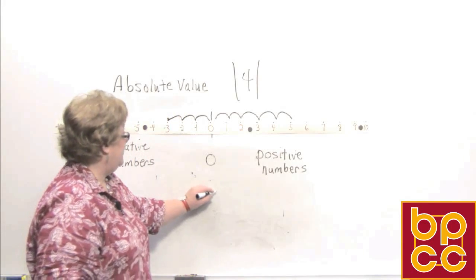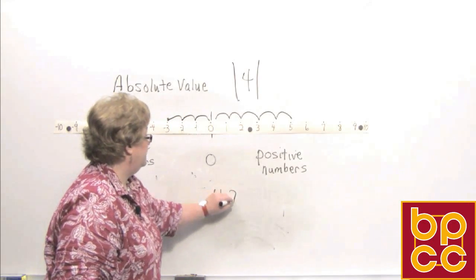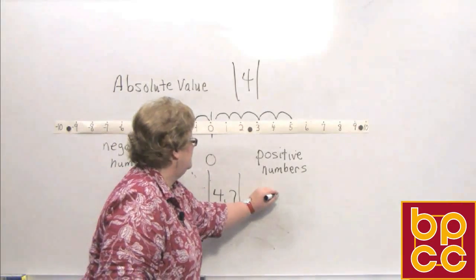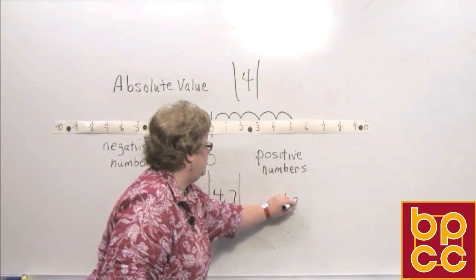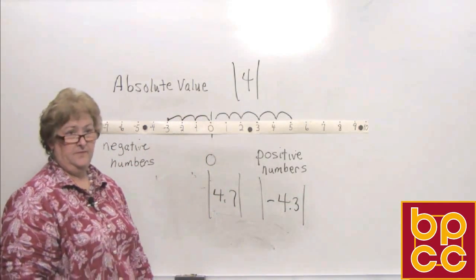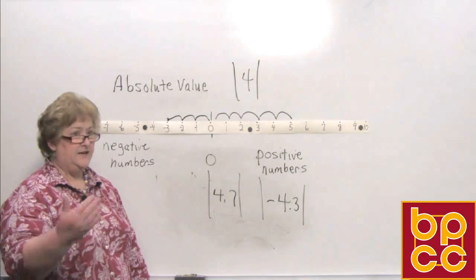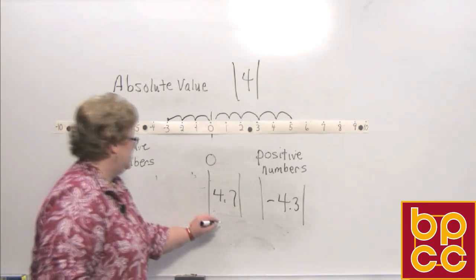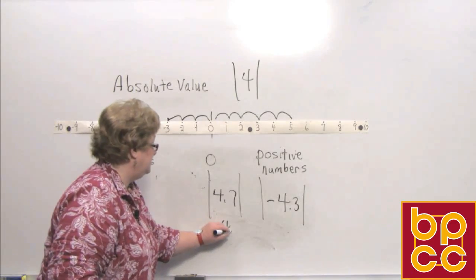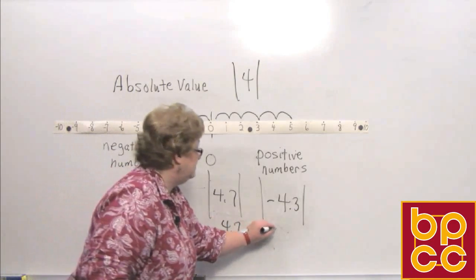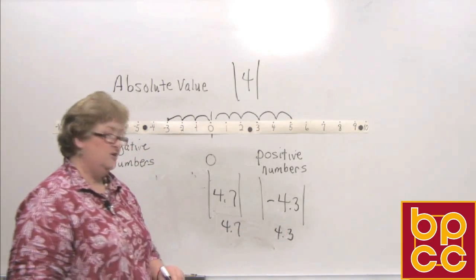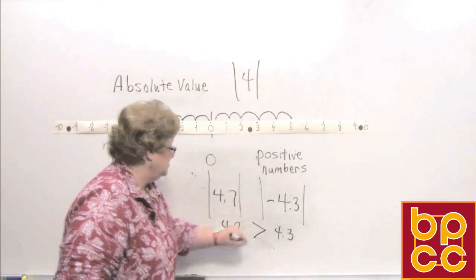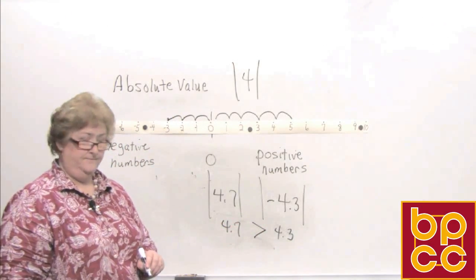Let's say I have 4.7 in absolute value and I'd like to compare it to negative 4.3 in absolute value. It doesn't matter if it's positive or negative — it always comes out as a positive. So 4.7 comes out as 4.7, and negative 4.3 comes out as 4.3. Therefore, 4.7 is greater than 4.3, and we put our inequality sign in right there.